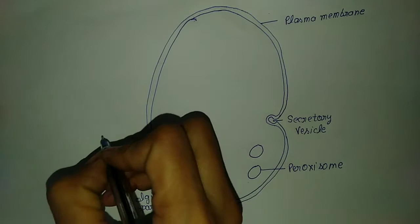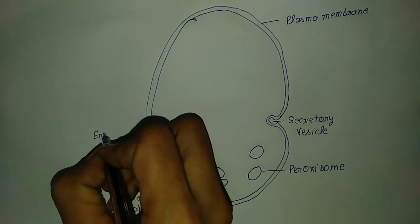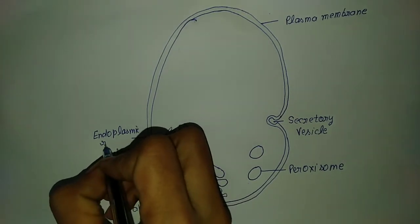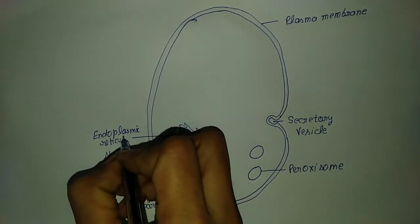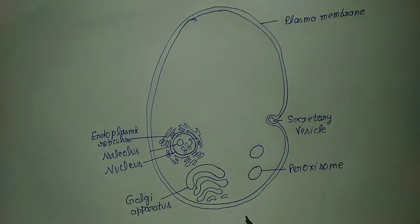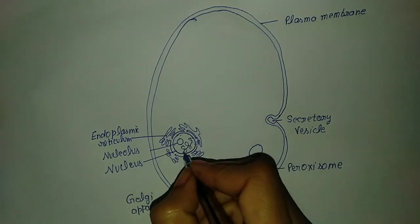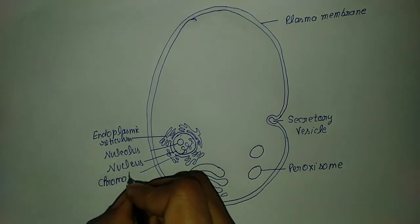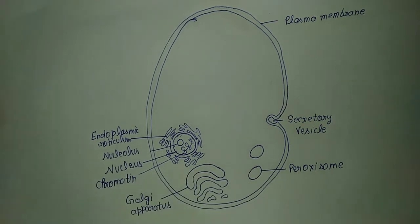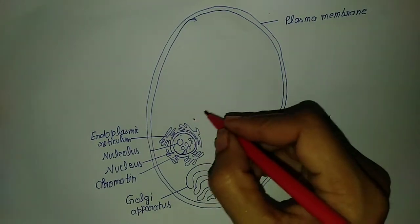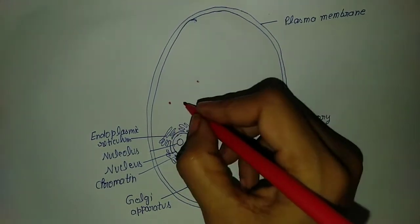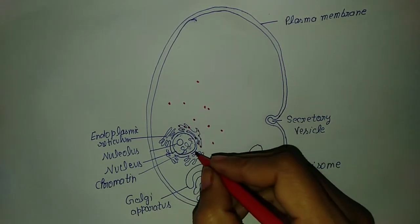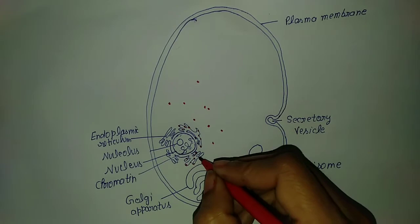This is the nucleolus. The nucleolus is present inside the nucleoplasm and is well developed in eukaryotic cells. This is the endoplasmic reticulum. Many chromatin are present in the nucleus, and these are ribosomes. Ribosomes are attached to the endoplasmic reticulum.